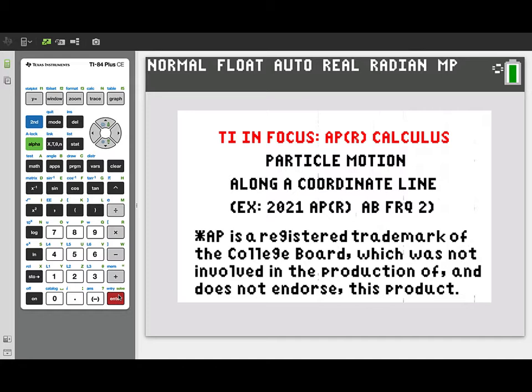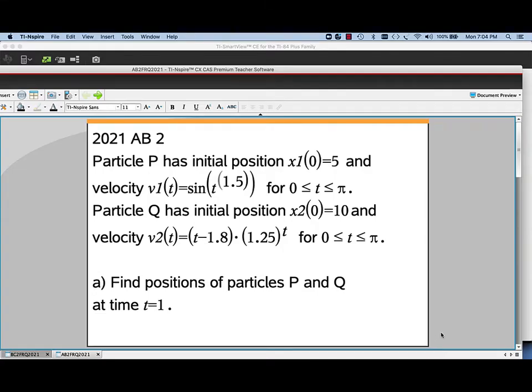We're going to take a look at the topic of particle motion along a coordinate line using the TI-84 graphing calculator. As an example, we'll look at the free response question number 2 from the 2021 released AP AB exam. In this question, we're given two particles, P and Q, moving along the x-axis.